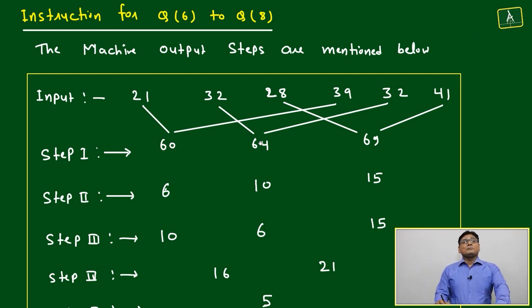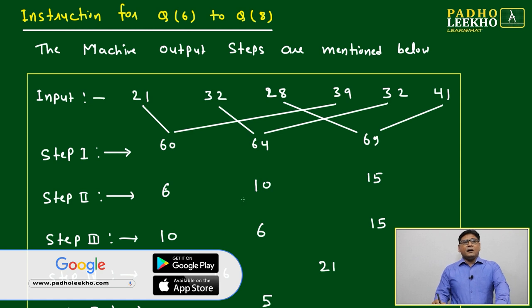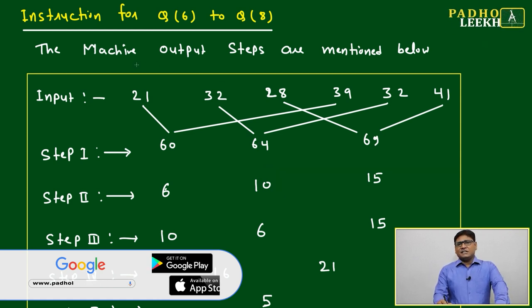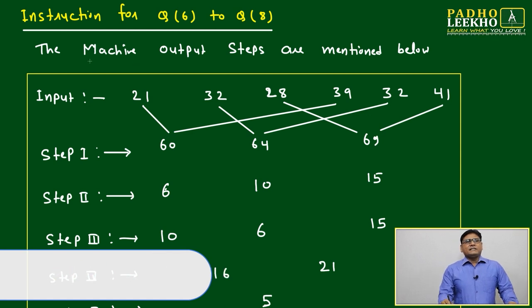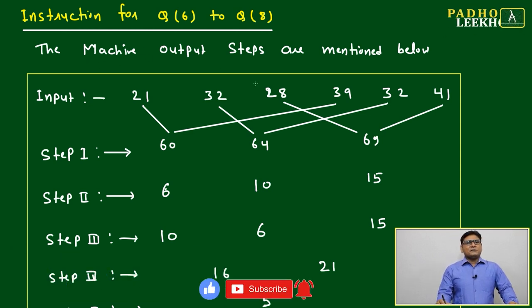This can be possible based on the different logic or mathematical concept we are putting to build the machine input and output. Just one example is given, question number 6 to 8. Machine output or steps are mentioned here. Input is 21, 32, 28, 39, 32, and 41.